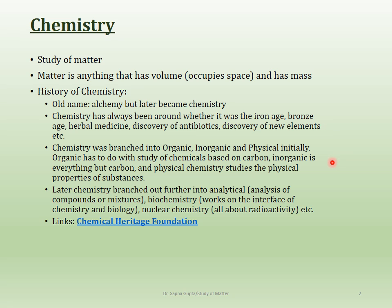Chemistry was eventually branched into three fields: organic, inorganic, and physical. Organic covers compounds that occur naturally — initially anything that occurs in plants and animals. Inorganic covers anything from non-living things like soil and water. Physical chemistry is where you study the physical properties of substances.